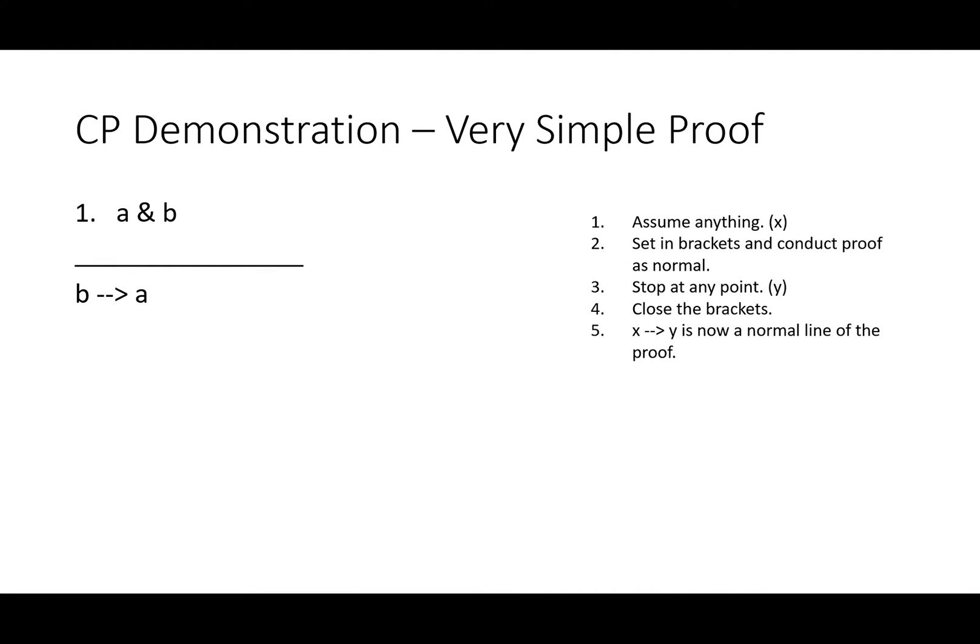What does this look like on a real example? So let's test it on a very simple proof. Our first premise is A and B. Our conclusion is if B then A. I hope we can see that this is true. This would be very easy to prove with a truth table. It would be a very simple truth table, in fact.